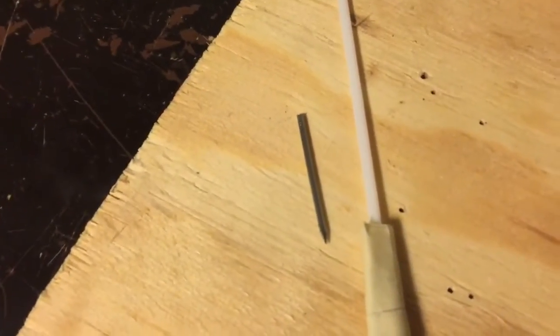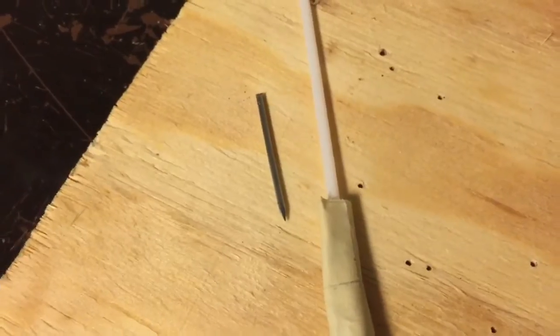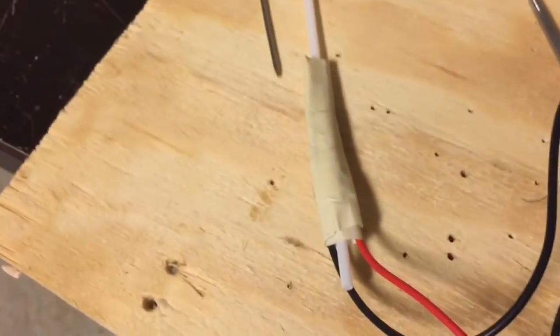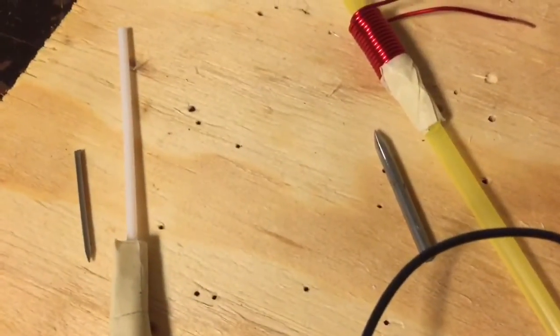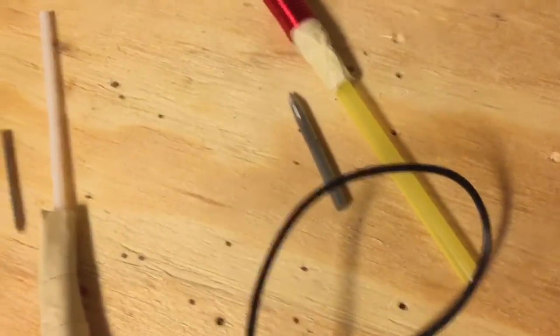I'm using some sawn-off nails here. There's a narrow caliber nail that fits in that coffee straw and there's a slightly wider nail that fits in the yellow drinking straw.